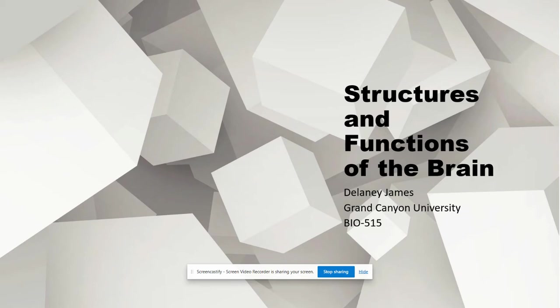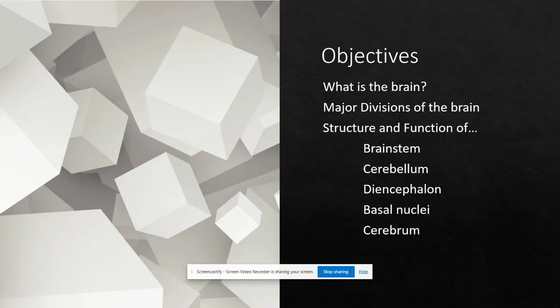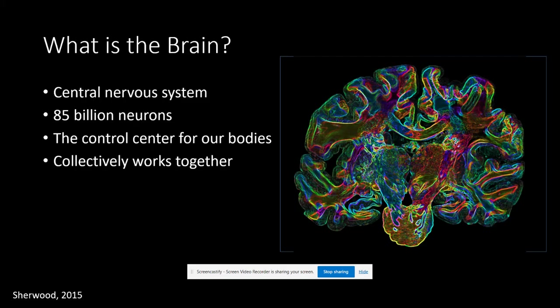Hello, today we will be discussing the major parts of the brain and their functions. Let's get started. The objectives we are going to cover include understanding what the brain is and the major divisions of the brain, as well as the structure and function of the brainstem, cerebellum, diencephalon, basal nuclei, and cerebrum.